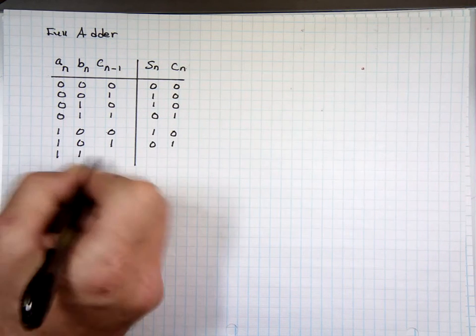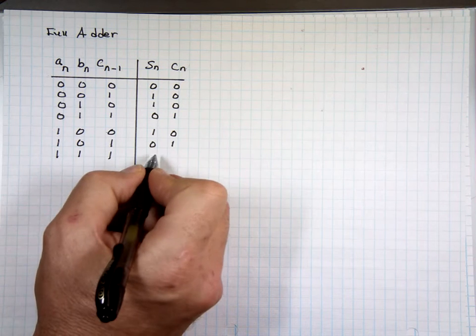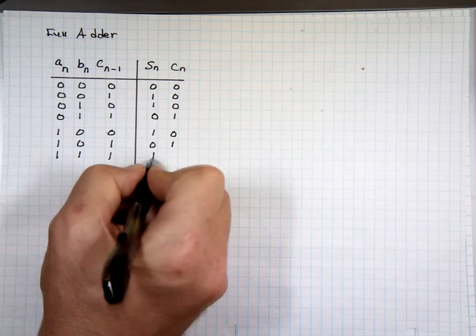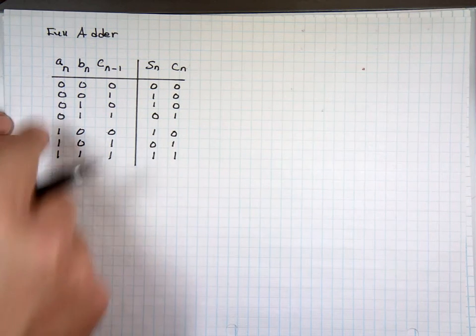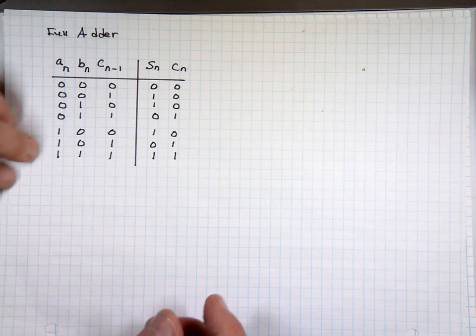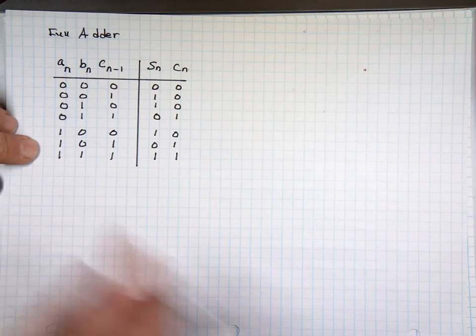And 1, 1, 1, that's 3. That's 1, carry 1. One, two, three, four, five, six, seven. Looks like I missed one. Which one did I miss? 1, 1, 0, right?